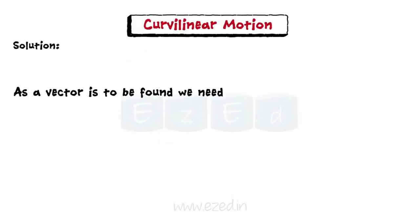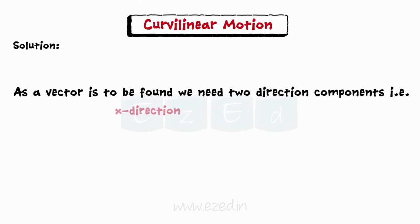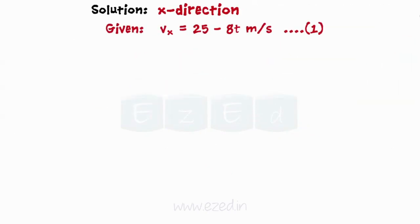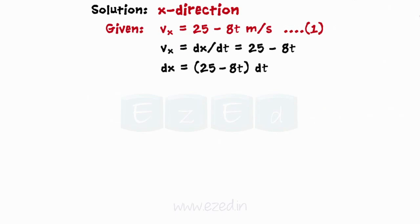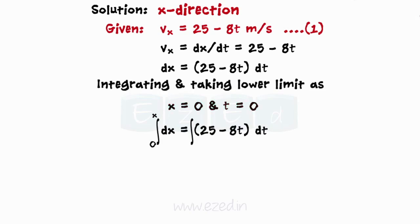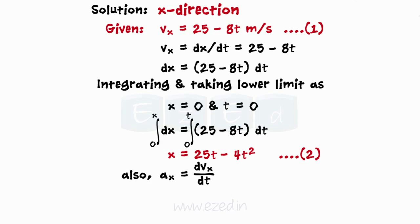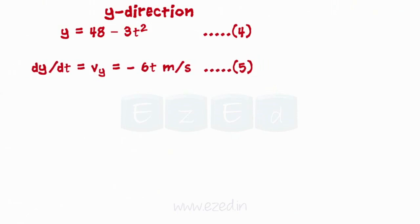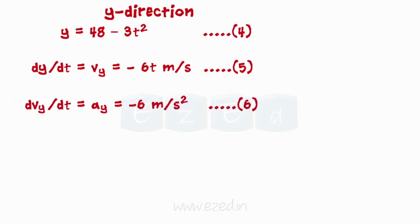As the vector of a particle is to be found out, we need two direction components: x-direction and y-direction. Consider the x-direction — we have been given velocity in the x-direction. Velocity in a direction is given by the partial derivative of distance with respect to time. Integrating and taking lower limits as x equals 0 and t equals 0, we get equation 2. Acceleration in the x-direction is given by the partial derivative of velocity with respect to time, giving equation 3. Consider y-direction — we have been given position in the y-direction. On differentiating, we get velocity in the y-direction. Differentiating again, we get acceleration in the y-direction.